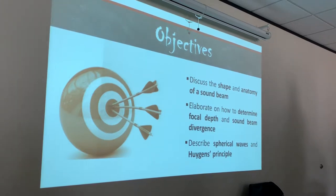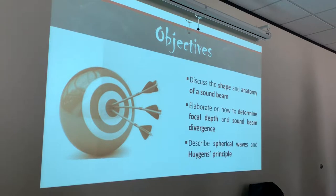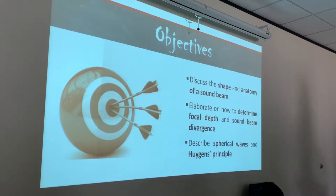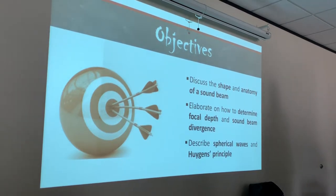Beam divergence — as the beam spreads out. First, the beam converges, it comes to a smaller point, then it's going to diverge and make itself bigger. We're going to talk about the relationship between the focal depth, the sound beam divergence, and transducer diameter and frequency. And then we're going to discuss spherical waves and Huygens' principle. No French speakers in here? For the purposes of this class, it's Huygens.